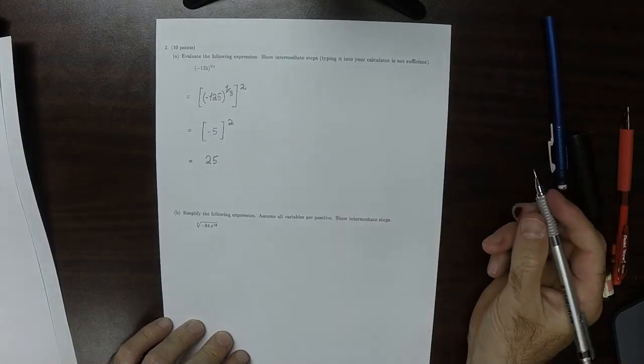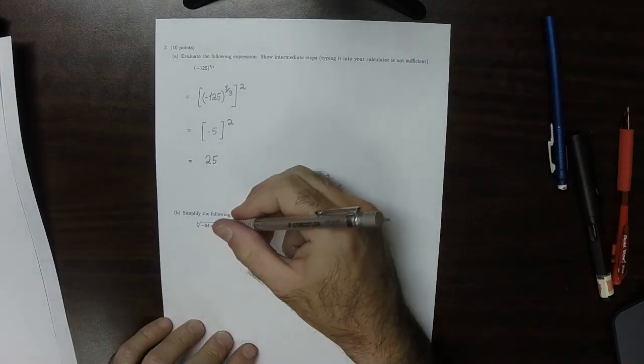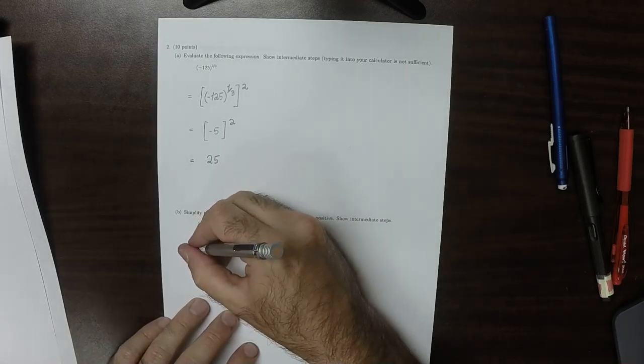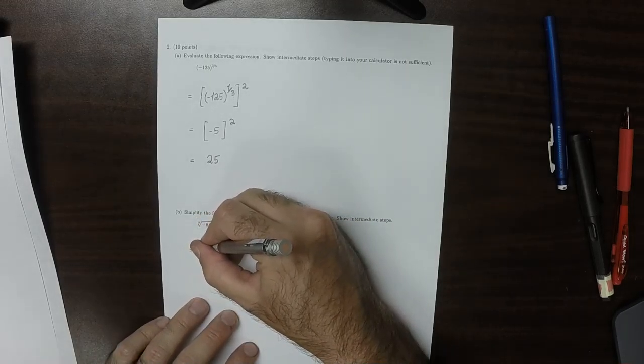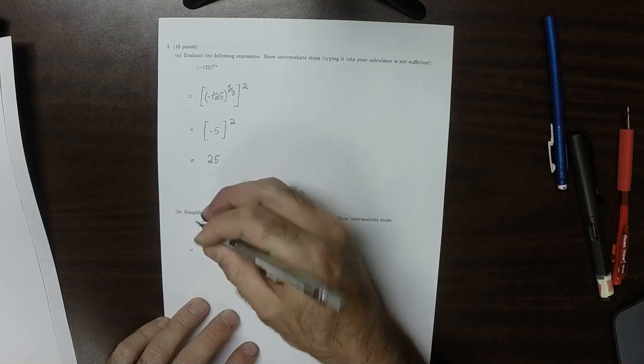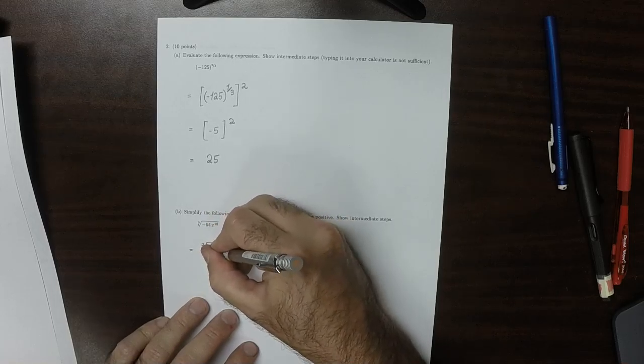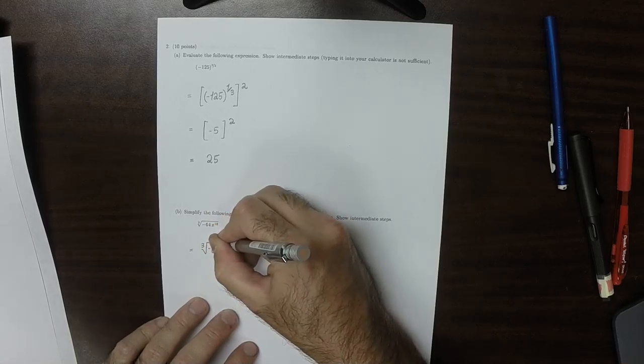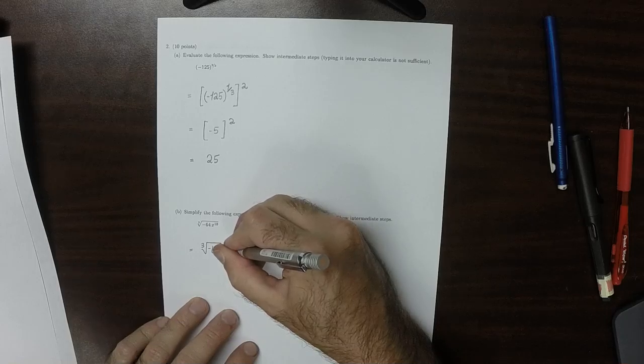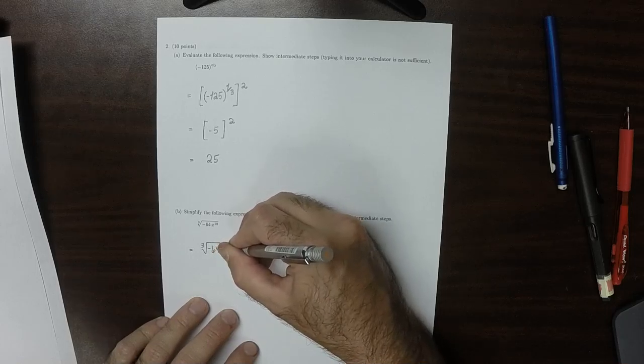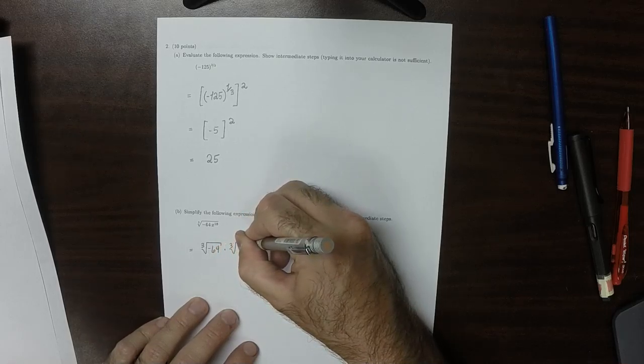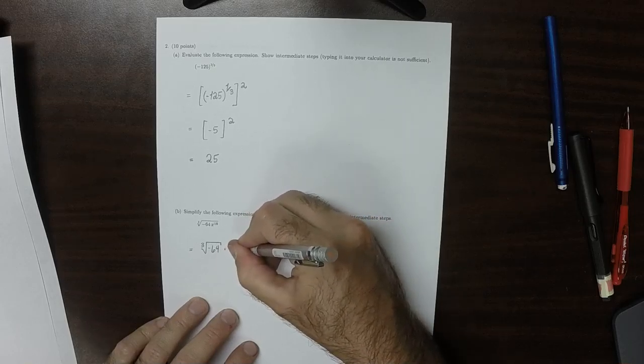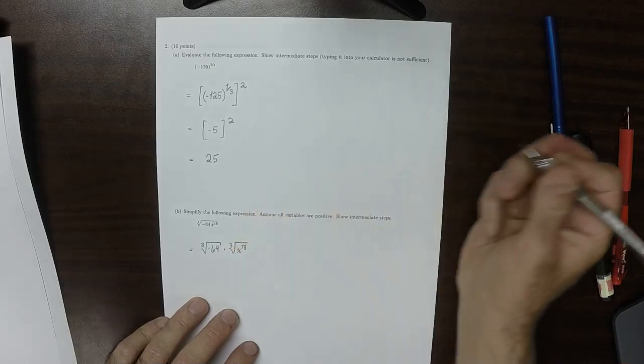Assume all variables are positive. So then carrying this out, that would be cube root of negative 64, distributing this radical to the various factors, times the cube root of x to 18.